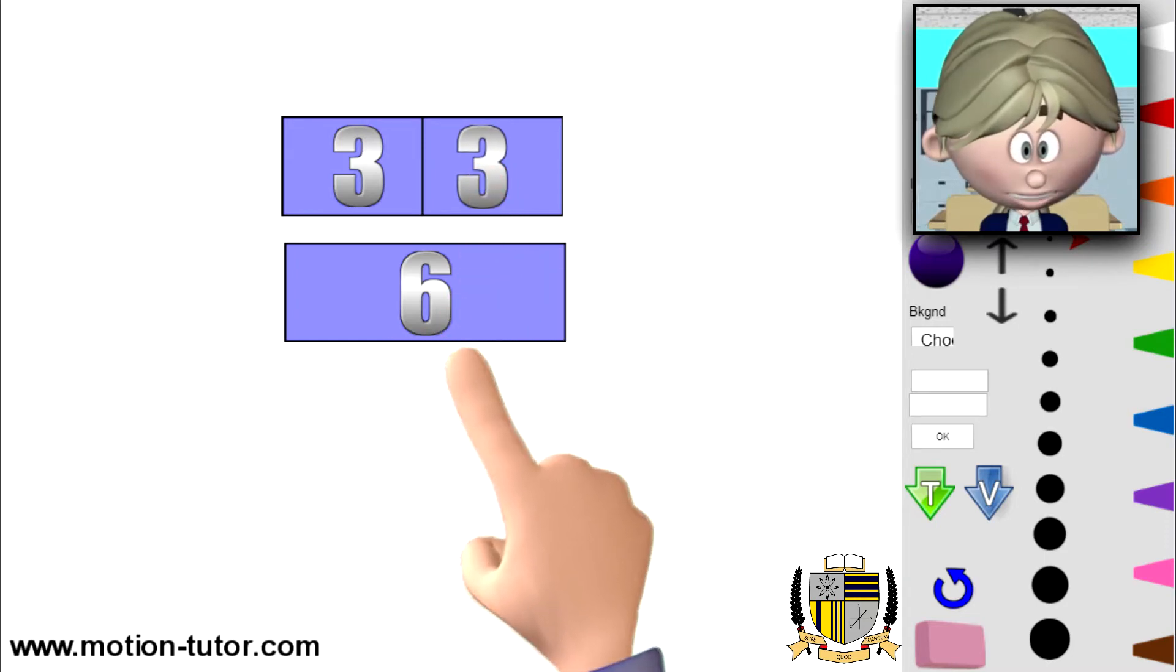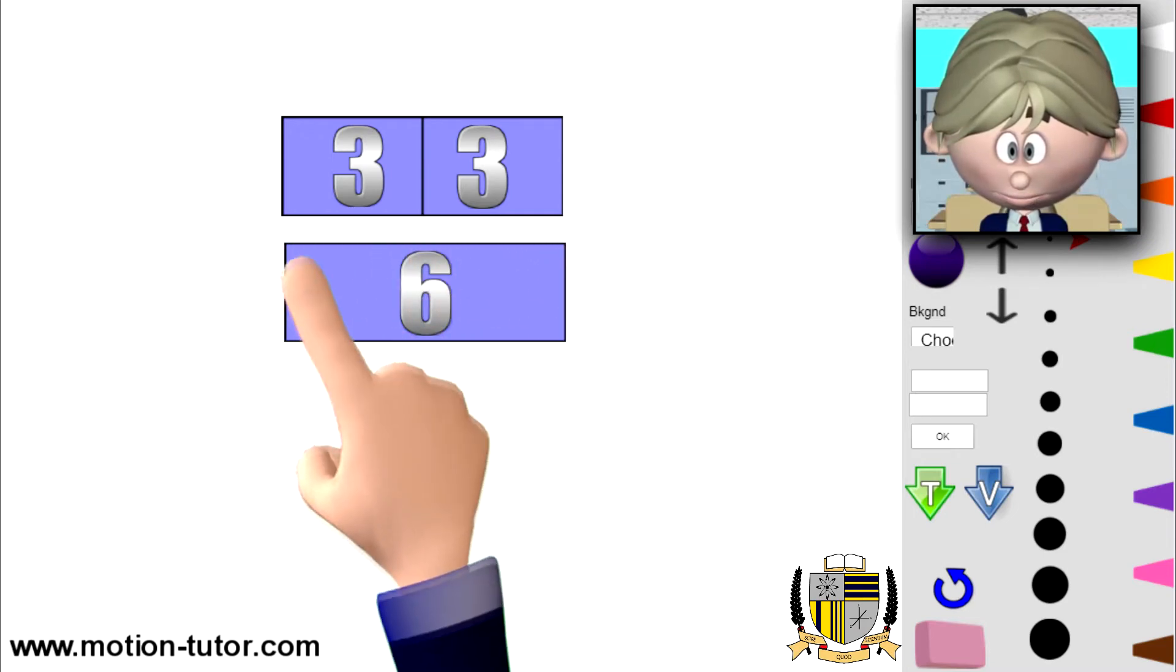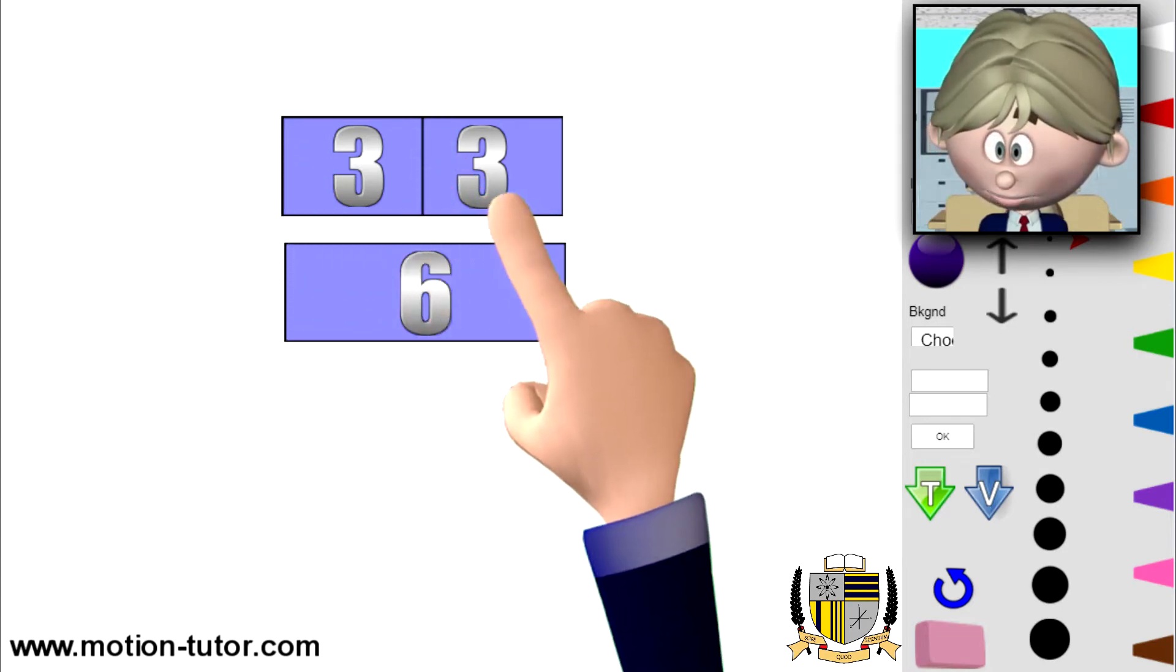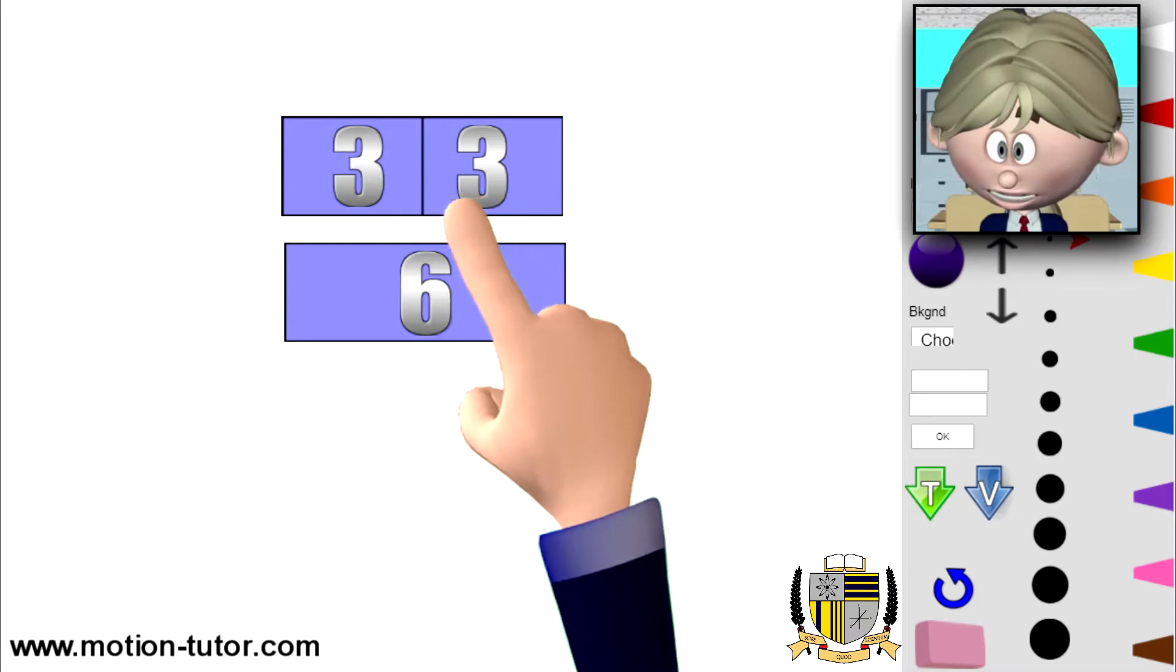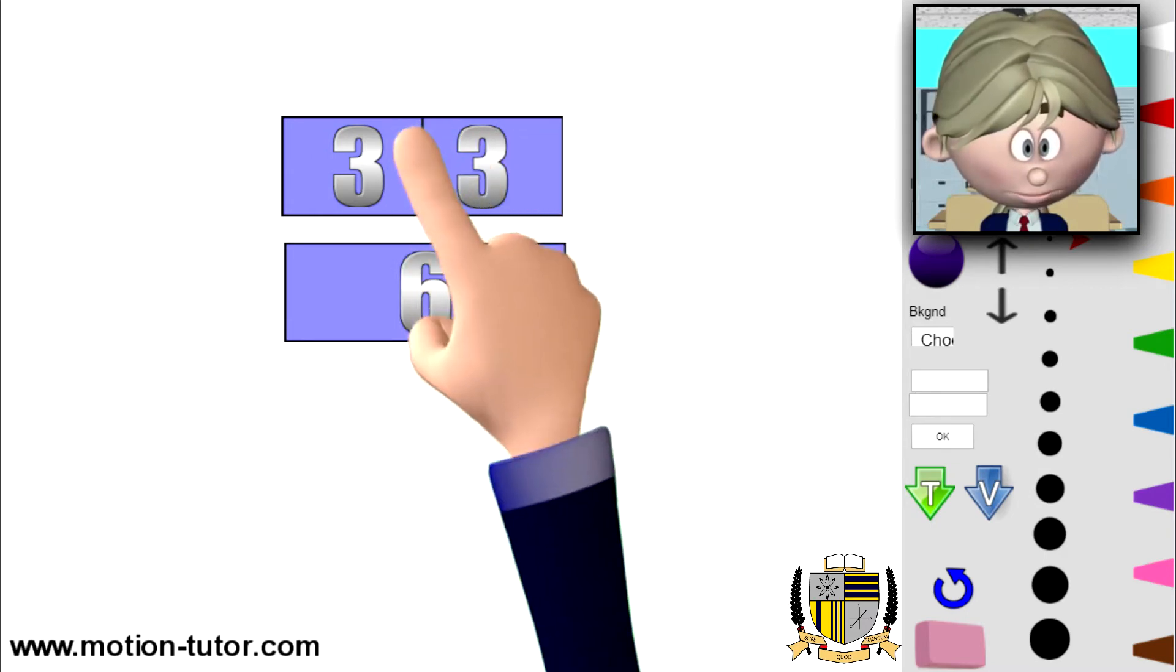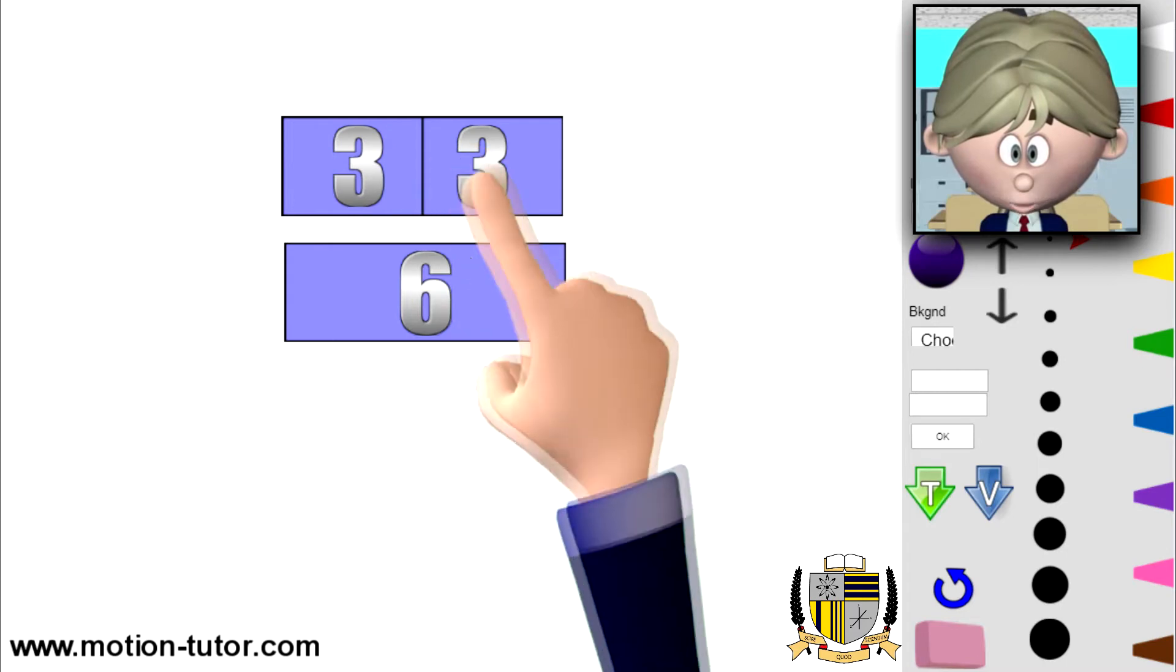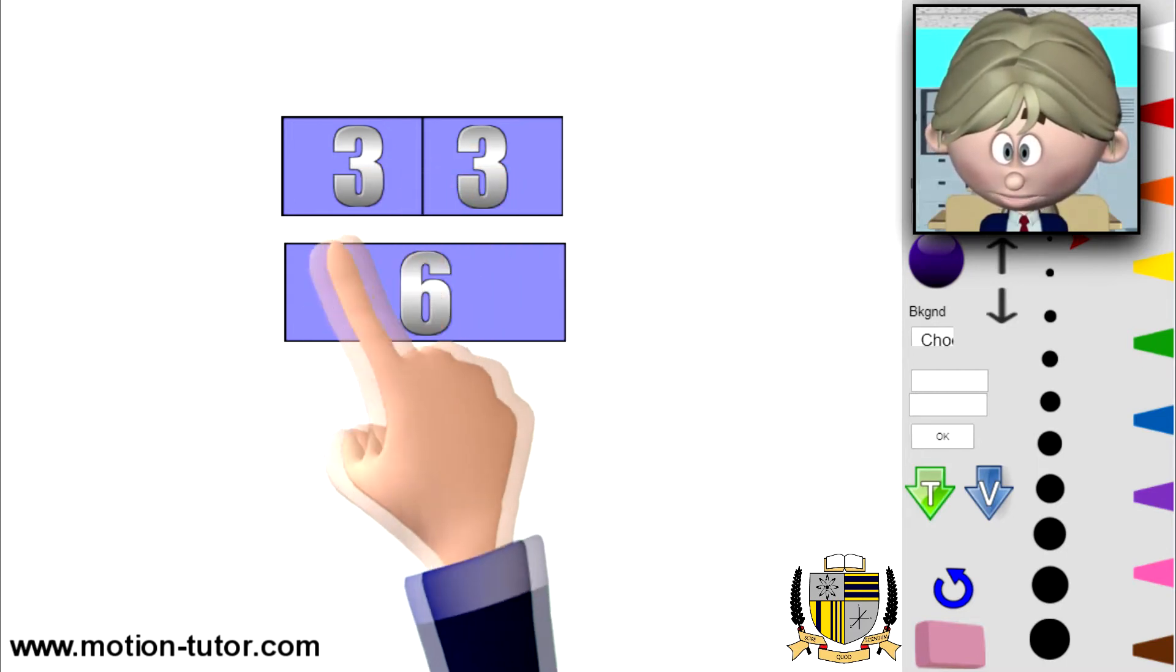If you take a look at this, this bar represents six. And this bar, that's the same exact size, but it's broken into two pieces. Each piece will represent three. Because it's broken in half, it makes sense that three is here and three is here. And together, they make this one bar of six.